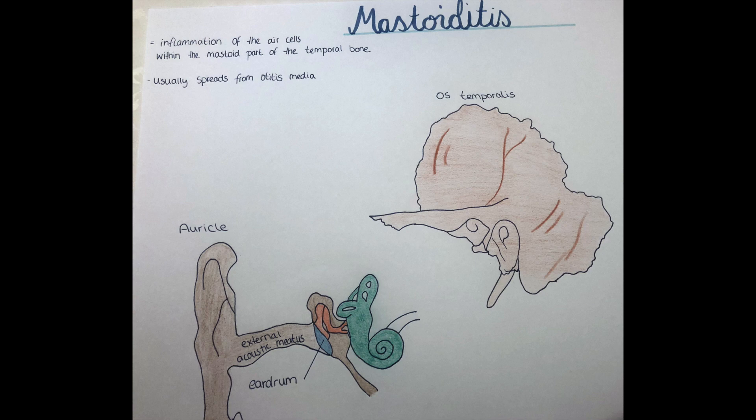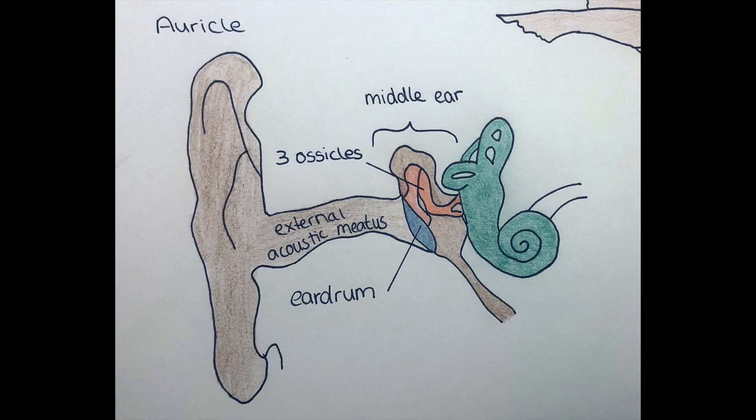The eardrum separates the external ear and the middle ear. The middle ear consists of the tympanic cavity, which houses the three auditory ossicles. These are three small bones that conduct sounds as vibrations from the tympanic membrane to the oval window of the inner ear.